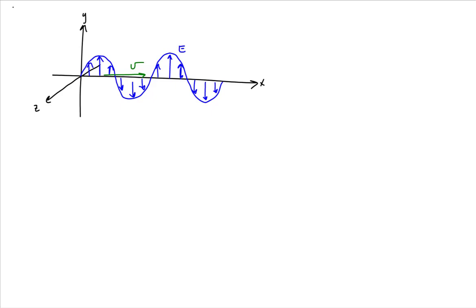And so the oscillation of the magnetic field, to get that wave moving in the positive x direction, would have to be perpendicular to the oscillation of the electric field. So in the z direction.